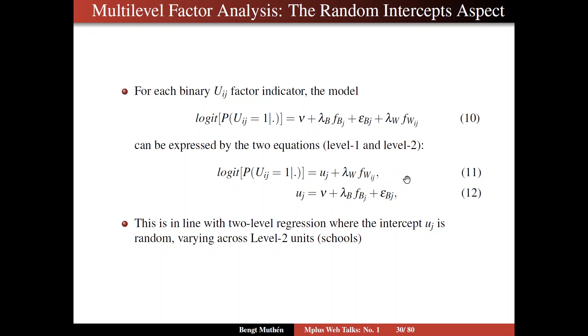But it's written in a very suggestive way here. That is, we think of the factor model in between as being a structure for the random intercept.